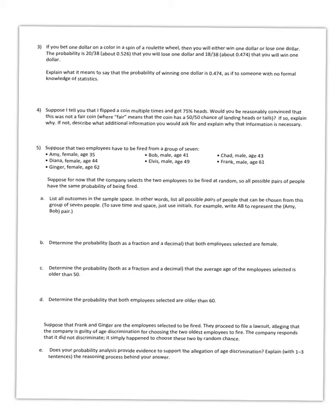If you were to explain this to someone without analogous statistics — remember, probability is the long run. It's what's happening in the long run. So if you were to do this experiment over and over again, say you were to spin the roulette wheel a thousand times or more, then you would probably win $1 about 474 times out of the thousand. So it's in the long run what's going to happen.